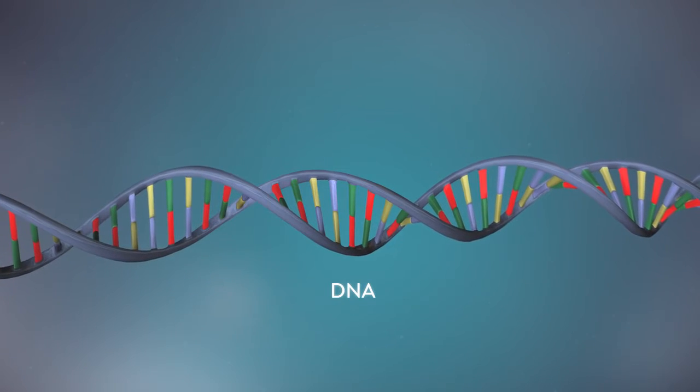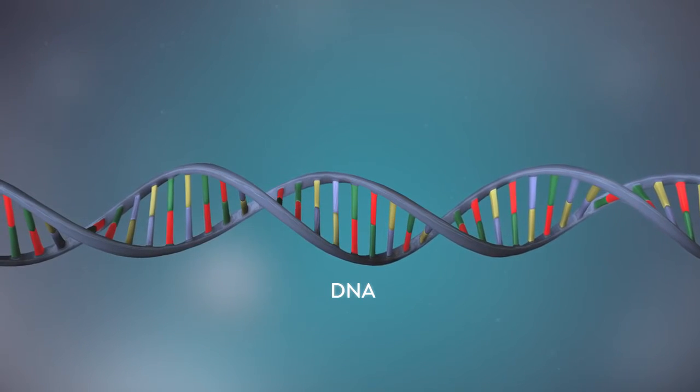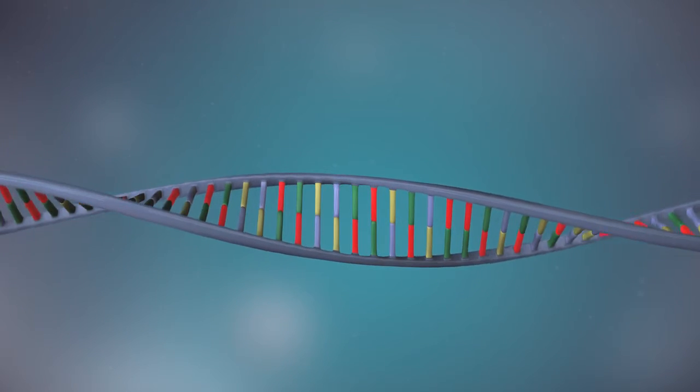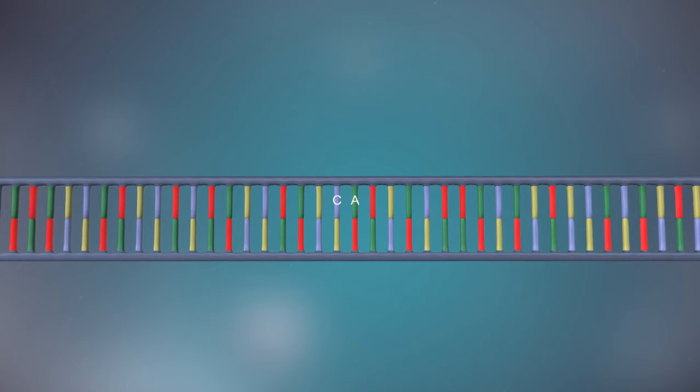DNA is a molecule made up of two strands, twisted around each other in a double helix shape. Each strand is made up of a sequence of four chemical bases, represented by the letters A, C, G and T.